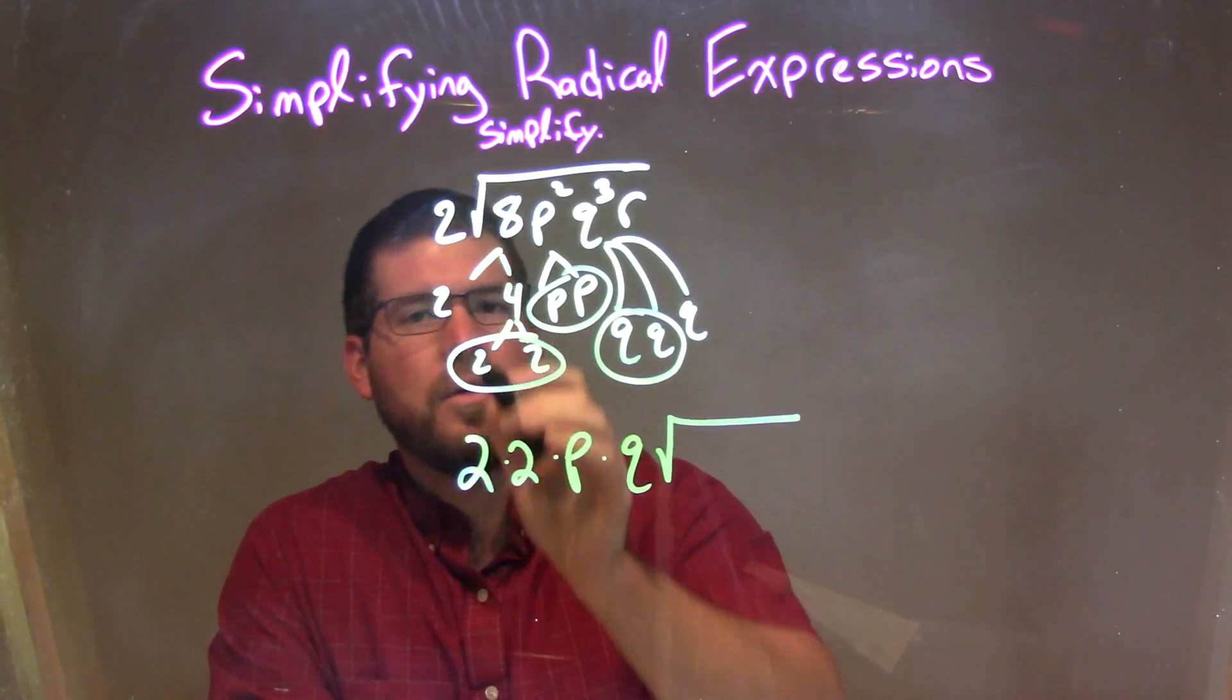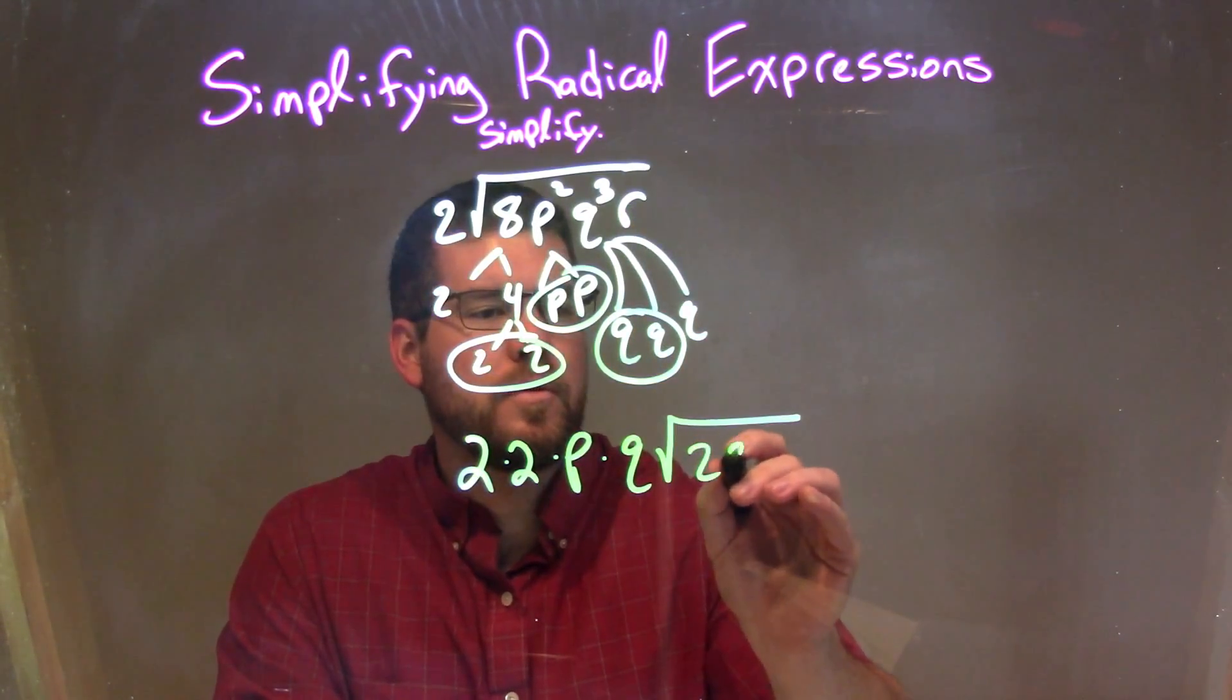The square root is what's left over, all the singles: 2, q, and r.